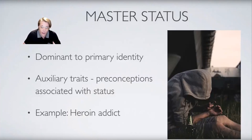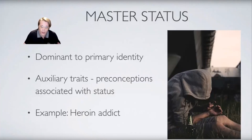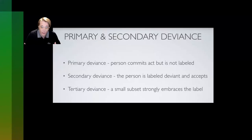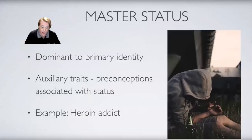As we'll discuss later in this course, the rates at which middle-class white women are using heroin are increasing, which relates to the relativity of deviance. We might not traditionally think of middle-class white women with a family when we picture a heroin addict, so this would go against the preconception we might hold. Lemert's deviance types relate to being labeled as deviant and developing a deviant identity, similar to Adler's seven stages.